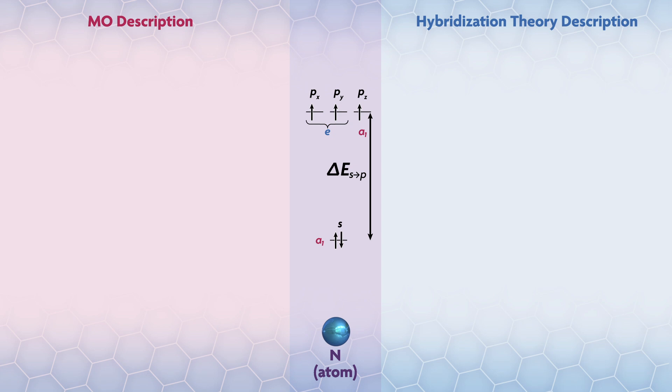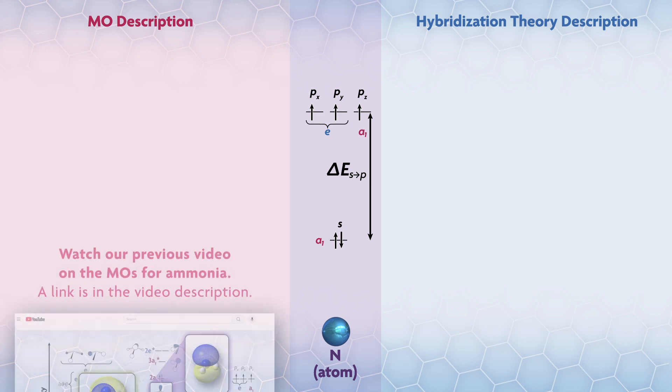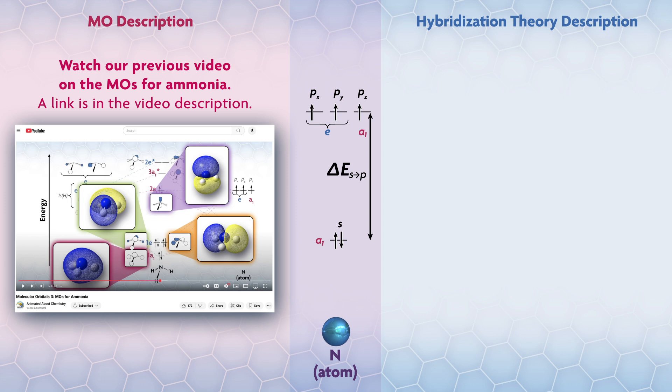There's an energy gap between the s and p orbitals which we will just call ΔEsp. One can get a good estimate of the energy gap for the atom by several experimental or computational methods, but the exact values aren't terribly important for the job at hand. We've done the MOs for ammonia on this channel before and I'll just use the results here. We will link that video, which is the third in the series on MO theory, in the show notes below.